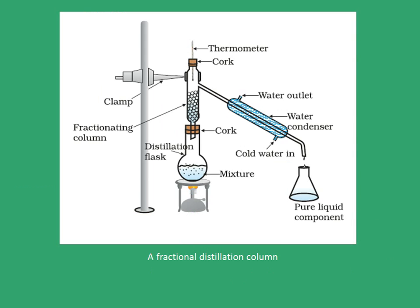The picture here shows a fractional distillation column. The difference between a fractional distillation column and a normal distillation column is that there is a fractionating column present before the condenser. The vapors pass through this fractionating column and get separated according to the different boiling points of the components present in the mixture. Hence it can be used for more than two components present in the mixture.